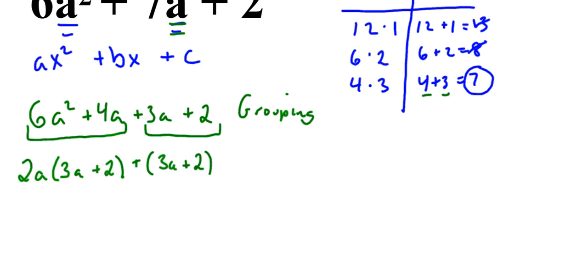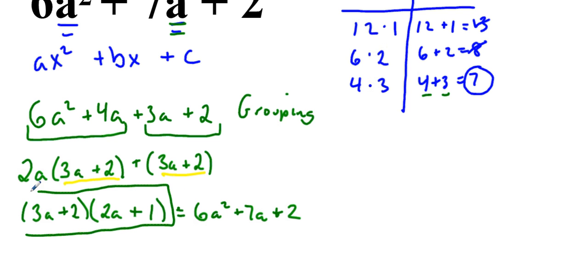Now what we created though is, if you notice right here, these two are the same, and that's the key thing. So grouping states: you group them together, you factor out the common thing, and then you factor out that common factor. So we're going to take 3a plus 2, and then what's left over, if I factor out 3a plus 2, I have 2a, and when I factor out 3a plus 2, I have plus 1. And that, my friends, is the factored form of 6a squared plus 7a plus 2. That is using the AC method.